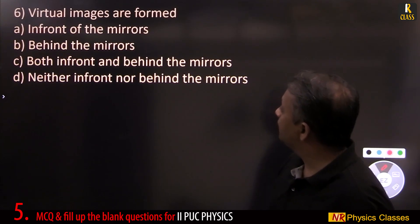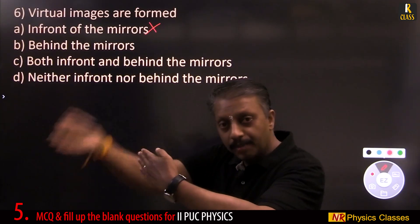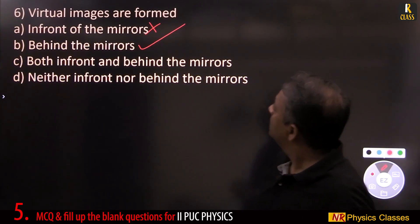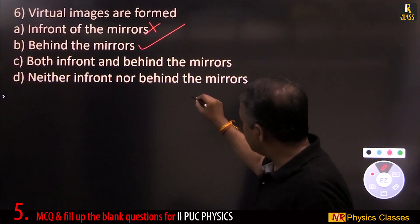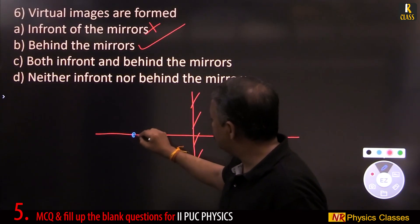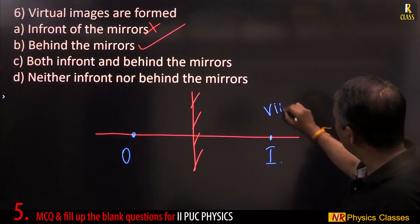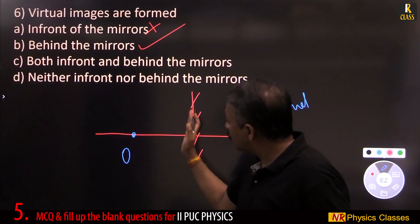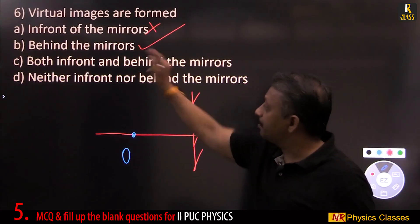Virtual images are formed behind the mirror, not in front. If there is a plane mirror and this is the object, the image is behind the mirror, which means it is always virtual. Because mirrors are designed to give image on the same side as the object. If it is on the other side means it should be virtual image. So, it is always behind the mirror.